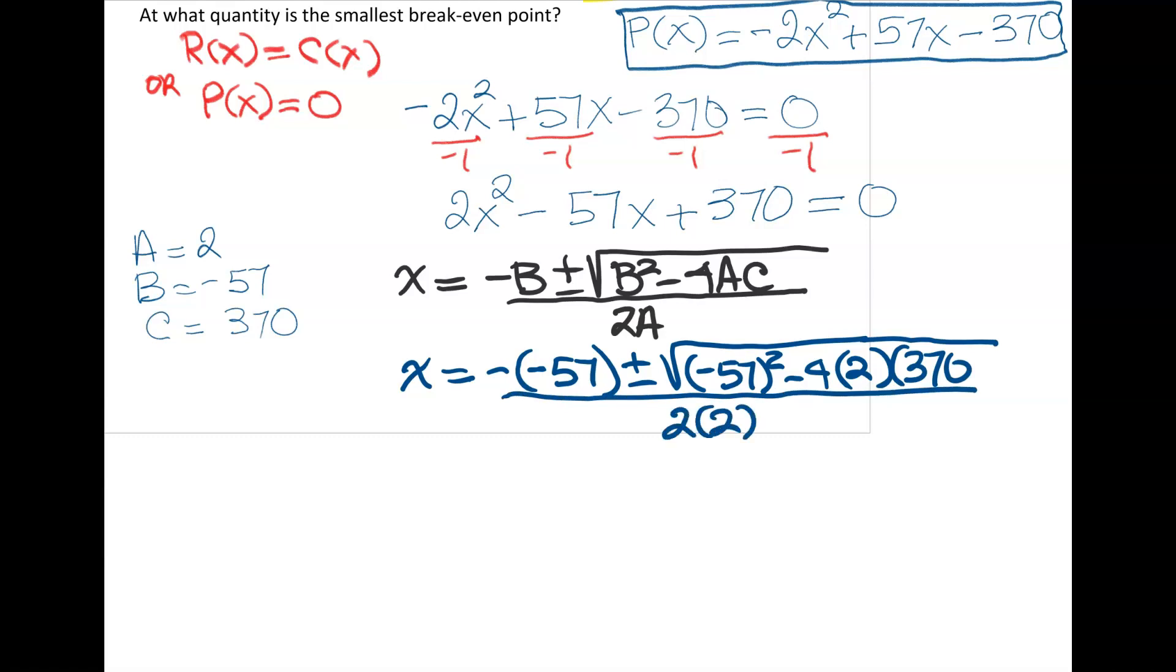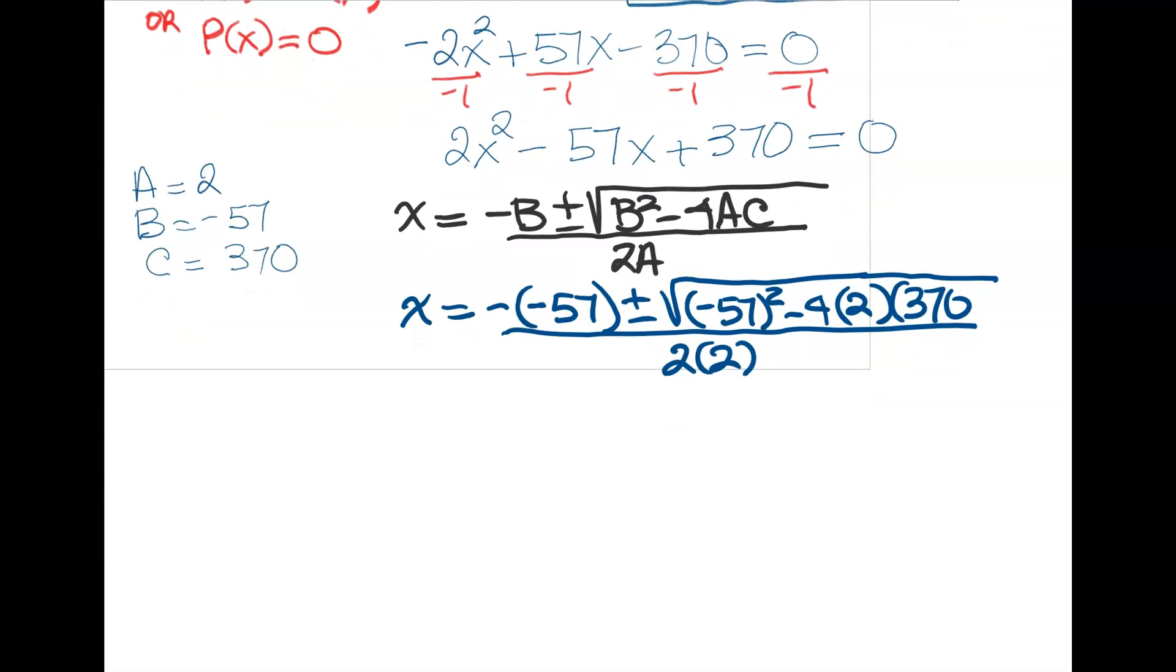Cleaning this up—use a calculator to speed it up a little bit—we're going to end up with 57 ± √289, all divided by 4. And 289 actually has a nice square root: √289 = 17.